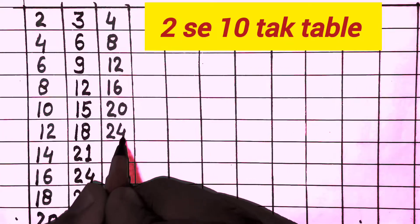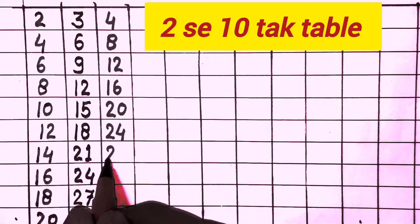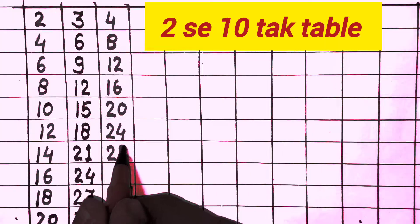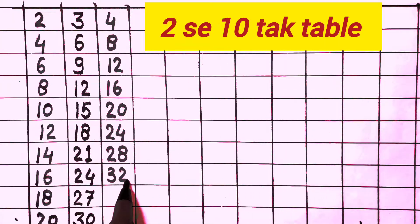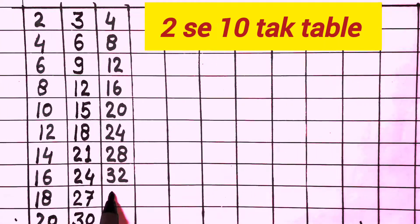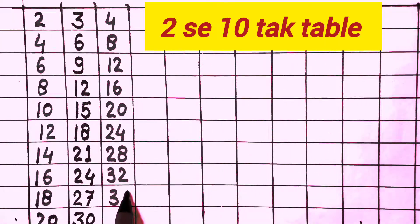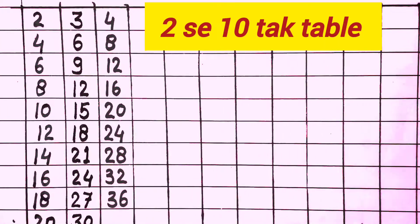4 times 6 is 24, 4 times 7 is 28, 4 times 8 is 32, 4 times 9 is 36, 4 times 10 is 40.